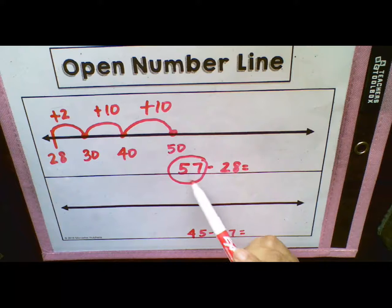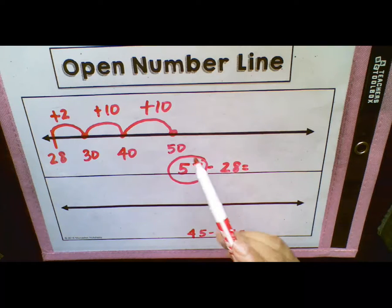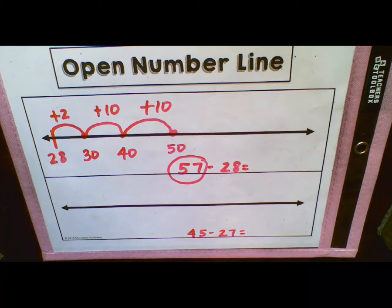Now, if I added another 10, that would put me at 60. We know that's too much because our number is 57. So we know that we do not need to add any more tens because that would put us over the number we're actually trying to get to. So instead, we can start looking at our ones.